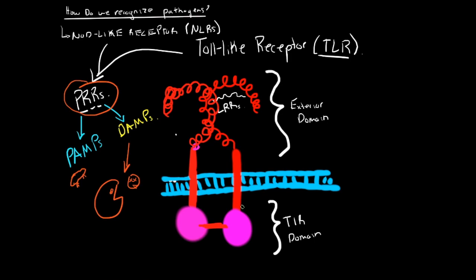NLRs also associate with retinoic acid-inducible gene-like receptors, or RLRs, which bind viral RNAs. Pathogen recognition receptors are found on myeloid cells, lymphocyte subsets, and other cell types commonly exposed to pathogens, such as skin, mucosal epithelial cells, endothelial cells, and fibroblasts.